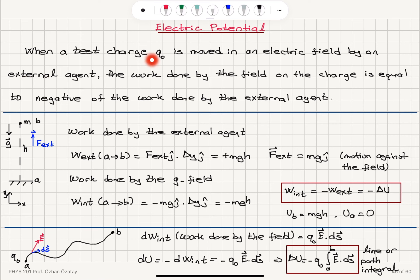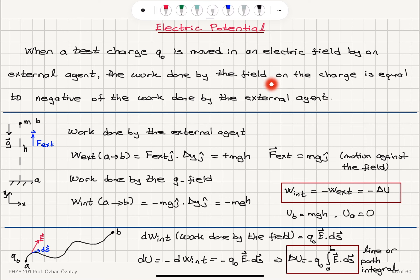When a test charge Q0 is moved in an electric field by an external agent, the work done by the field on the charge — this is what we call the internal work — is equal to the negative of the work done by the external agent.